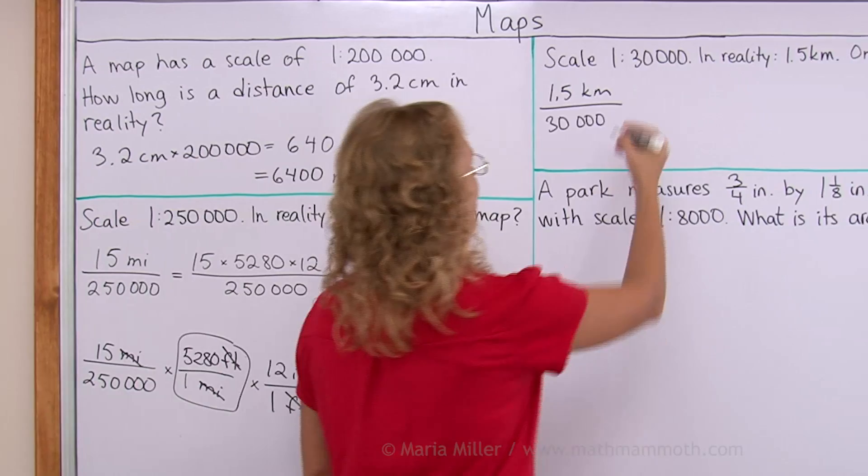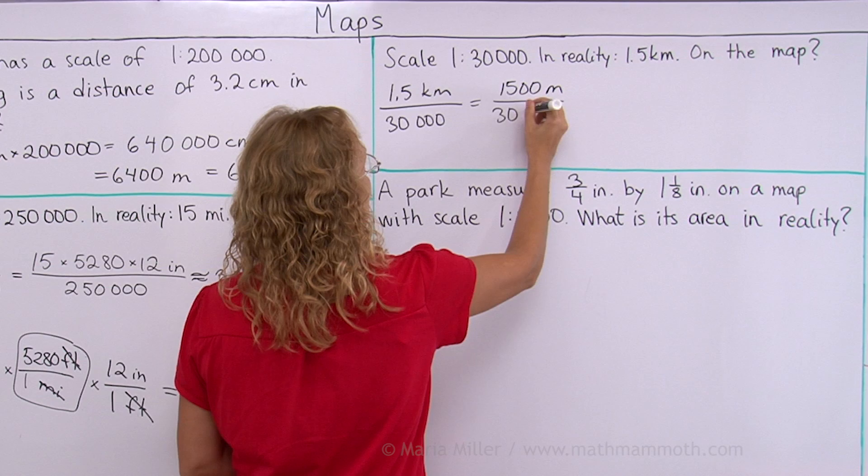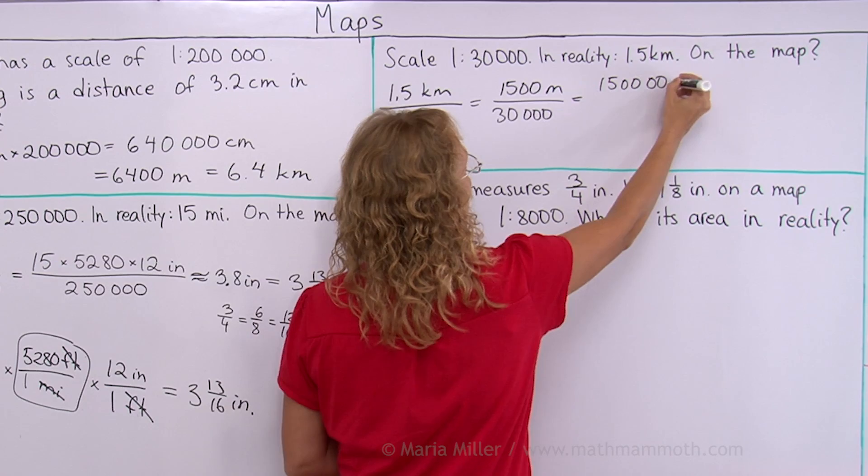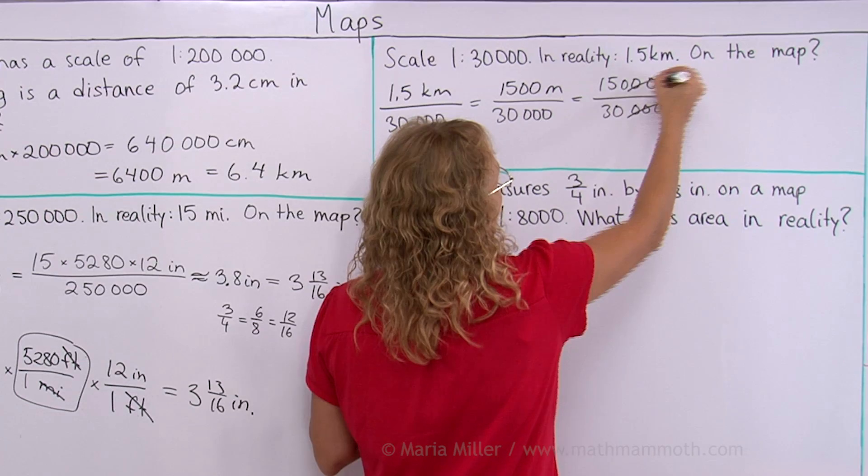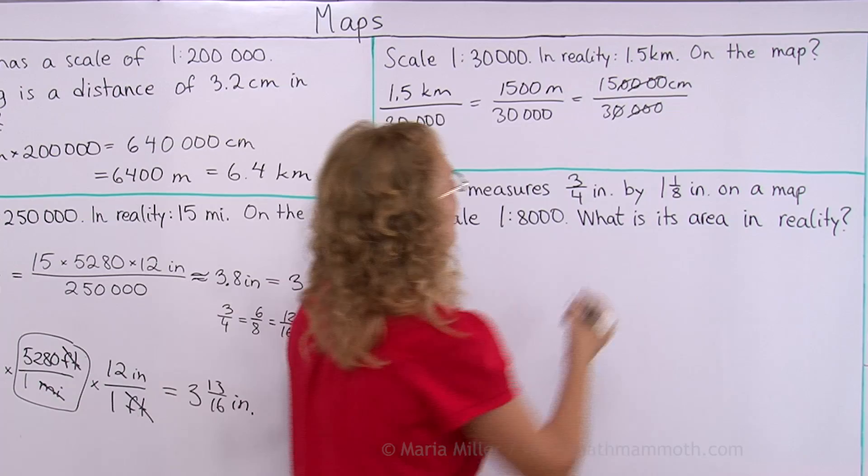This is 1500 meters, right? And then into centimeters, I will multiply it by 100. So two zeros there. Now my division will be very easy because I can just cancel first of all by 10,000. It looks like this. I cancel these zeros out. It means that I divided both by 10,000. And it is just 15 divided by 3. So it is 5 centimeters.